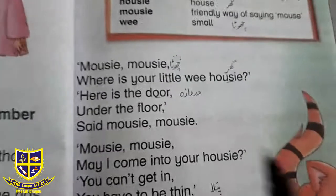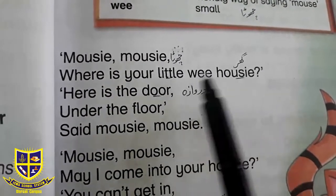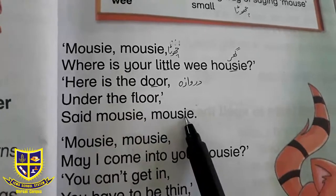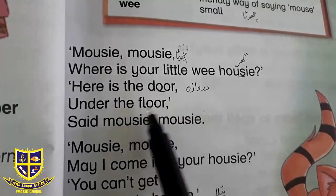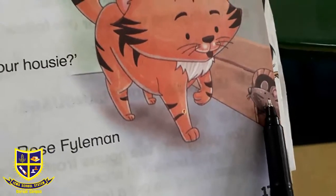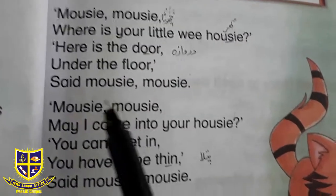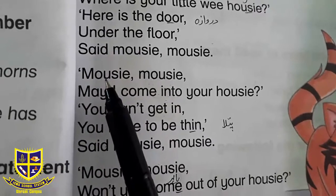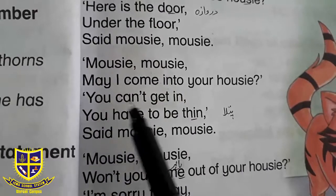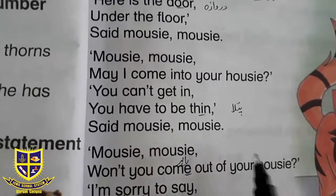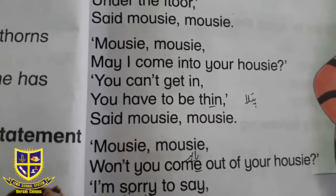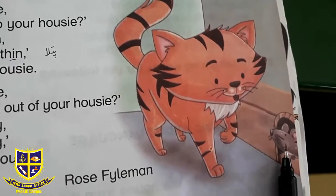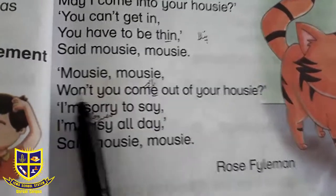اب ہم start کرتے ہیں کہ اس cat اور mouse کے درمیان کیا باتچیت ہو رہی ہے۔ Cat کہتی ہے: 'Mousey mousey, where is your little wee housey?' یعنی cat کہتی ہے کہ mousey، آپ کا چھوٹا سا گھر کہاں پر ہے؟ Mouse نے جواب دیا: 'Here is the door, under the floor, said mousey mousey.' یعنی یہاں پر ہے — دروازے کی طرف دیکھیے اور فرش کے نیچے۔ Mouse کے گھر اکثر چھوٹے سوراخوں میں بنے ہوتے ہیں۔ Cat دوبارہ کہتی ہے: 'Mousey mousey, may I come into your housey?' کیا میں آپ کے گھر آ سکتی ہوں؟ Mouse کہتا ہے: 'You can't get in, you have to be thin.' یعنی نہیں، آپ اندر نہیں آ سکتیں — آپ کو پتلا ہونا پڑے گا۔